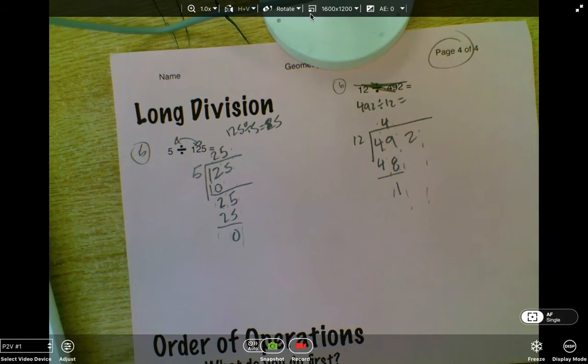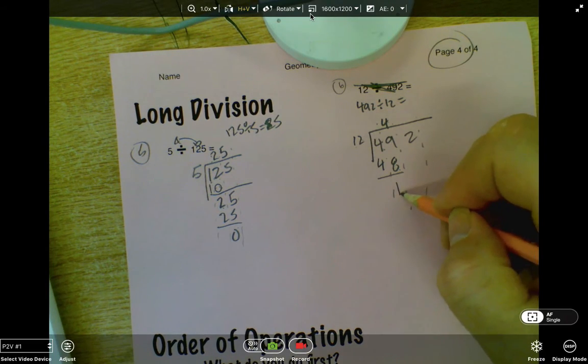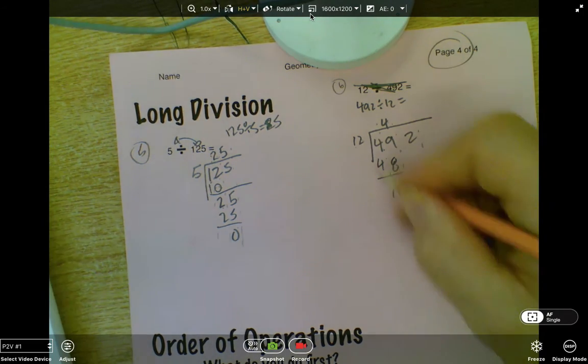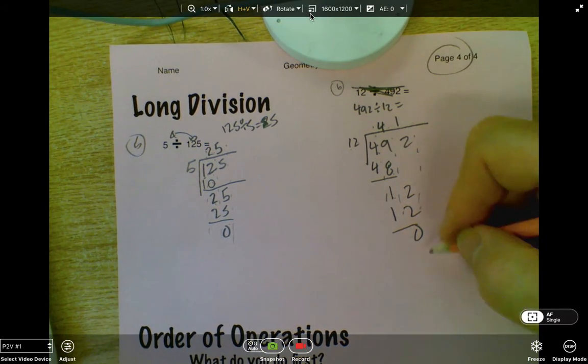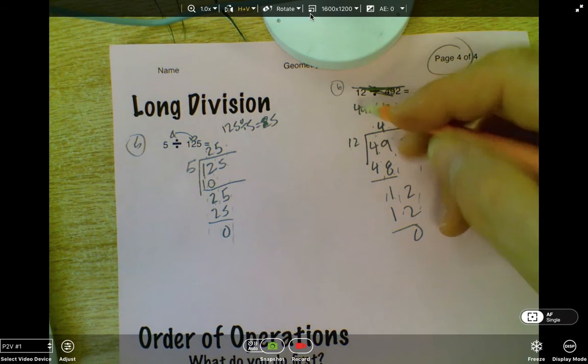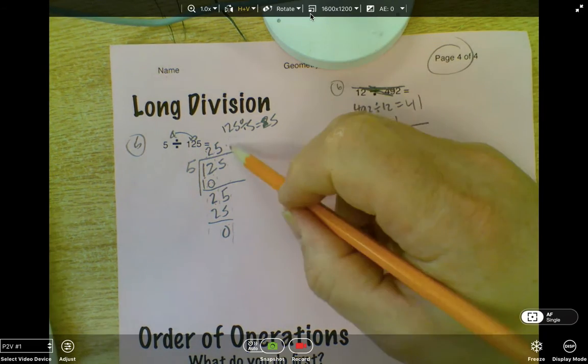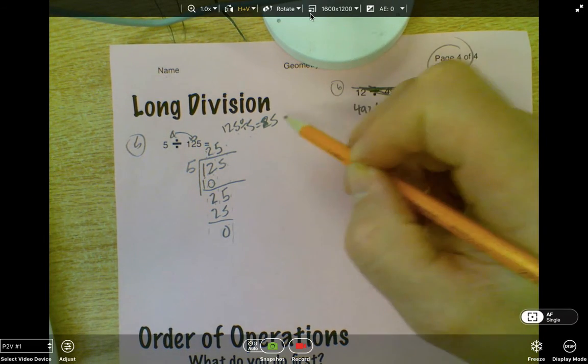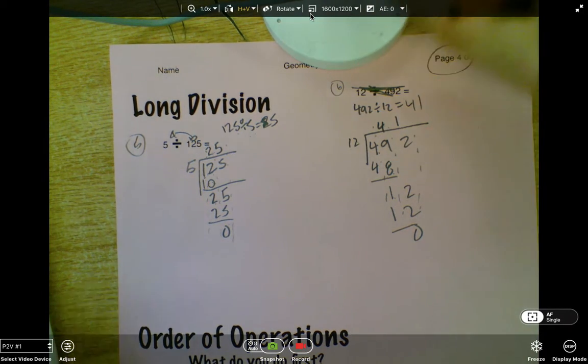Now, I do the subtraction here, and I have a one that comes down. Again, I can't make a solid group with a one. So I bring down the two. Now, I can make one more solid group. And that will be 41, remainder zero. All the questions on the test will have remainder zero. So it should be nice and easy. So 492 divided by 12 is 41. And 125 divided by five is 25. Sorry for that, boys and girls and parents. We'll fix that in class. But that is what long division looks like.